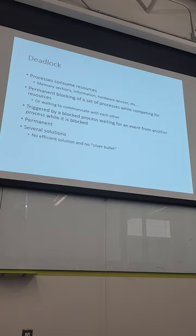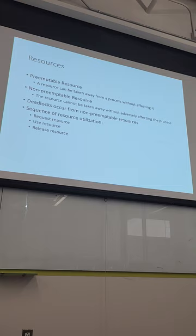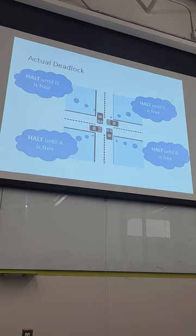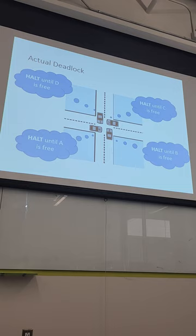It's possible to have permanent blocking because multiple processes are competing for shared resources. There are several solutions, but no perfect solution — no silver bullet. One important question is: are those resources preemptible? If you can take a resource away from a process, the problem becomes much easier. In the intersection example, if car four can back up, the others can proceed, and then car four can go. It's only with non-preemptible resources that you really have a problem.